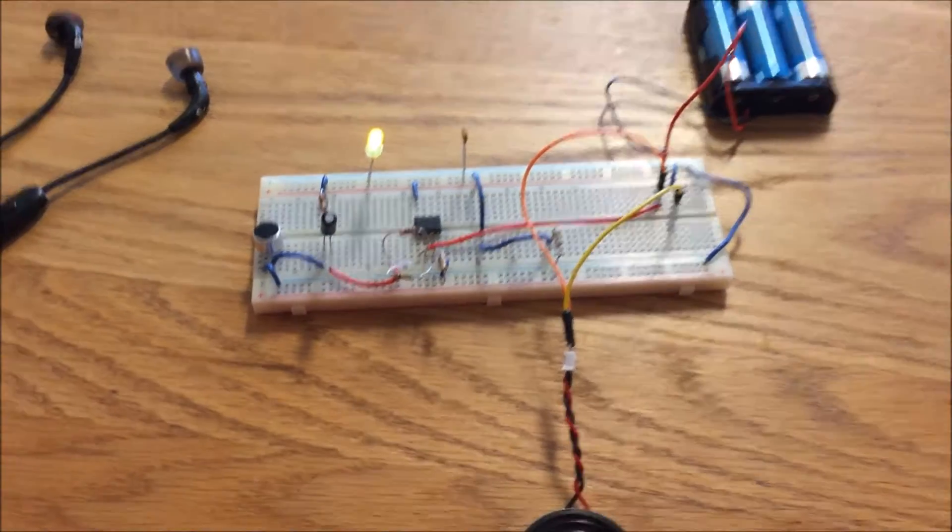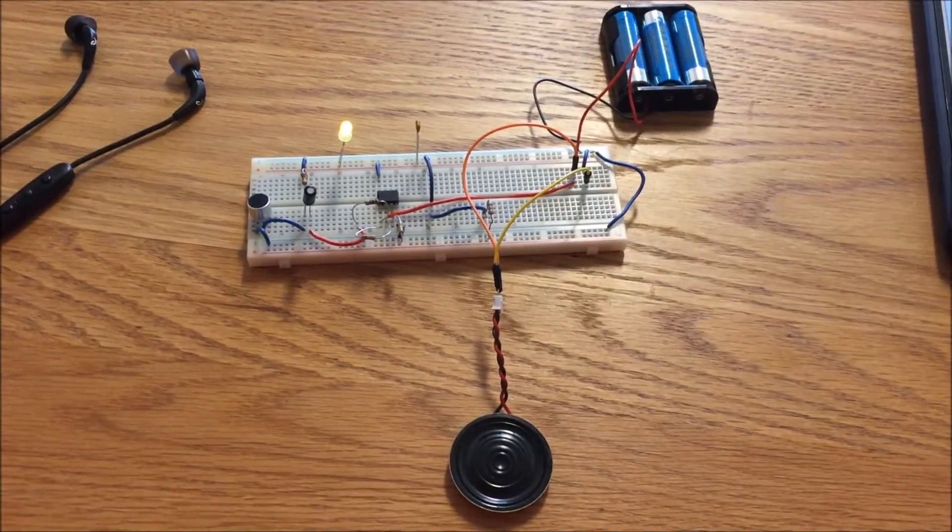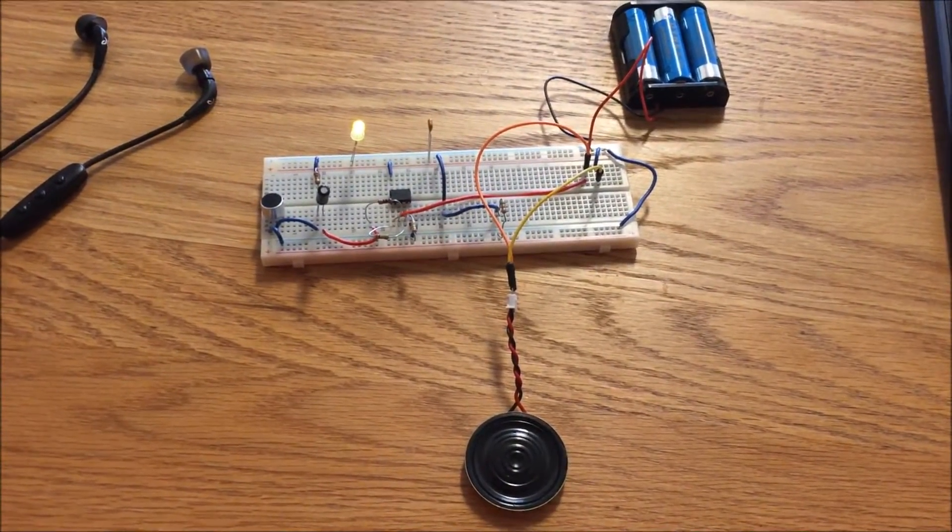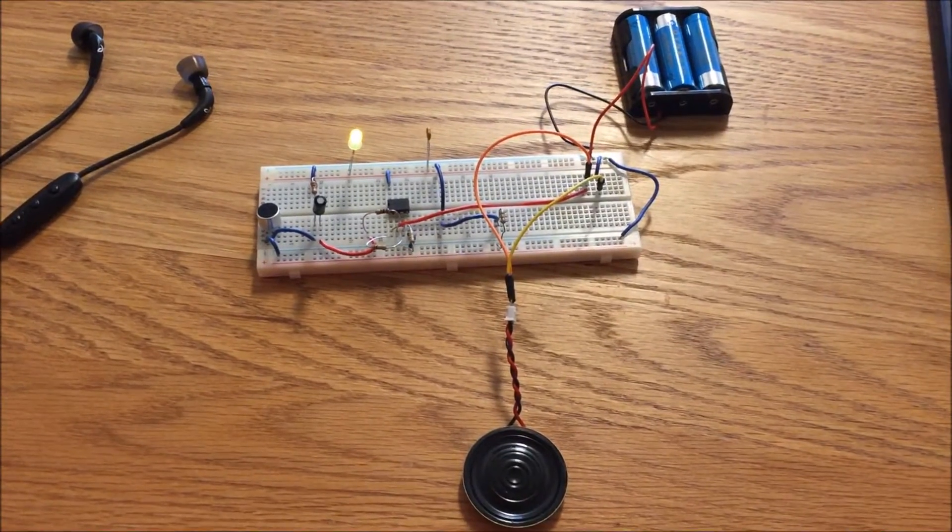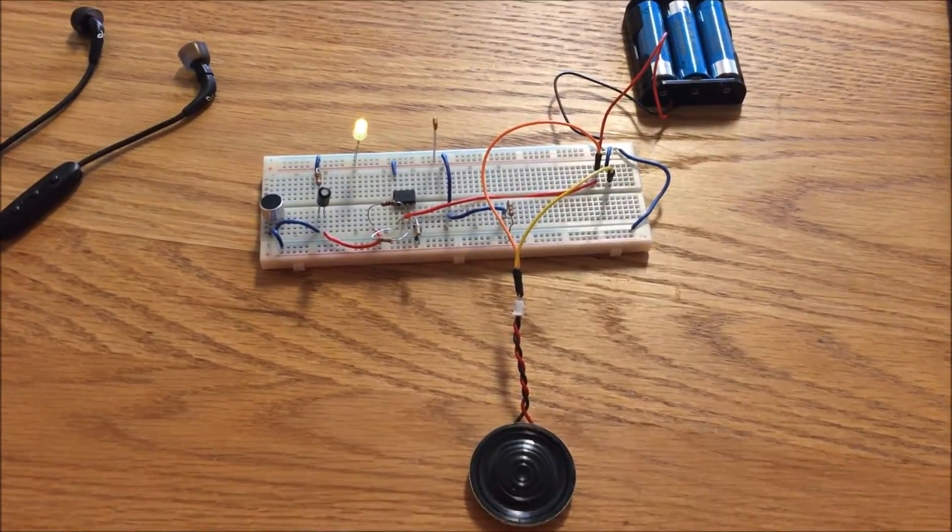My circuit is a microphone amplifier circuit. Basically what it does is it takes an input from a microphone, passes it through the operational amplifier, and then outputs it to a speaker connected to the circuit.